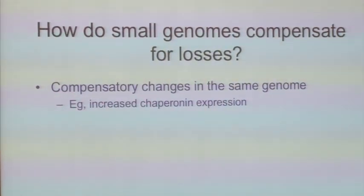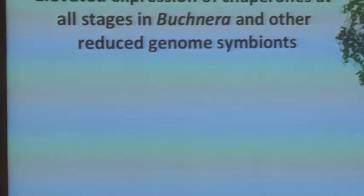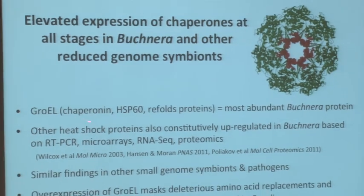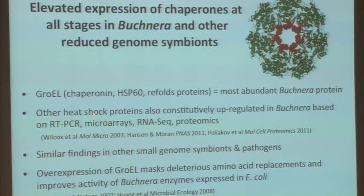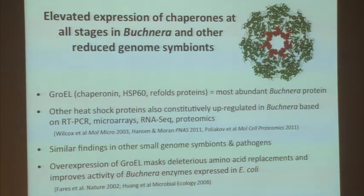What happens as they get smaller and smaller — how do they compensate? One thing is compensation within the same genome: in all of these cases they very highly express their chaperones — chaperonin and other heat shock proteins that deal with destabilized proteins. This is a pattern seen again and again; they're always the most highly expressed genes in transcriptomes of these symbionts. First noticed in Buchnera, where Hsp60 or chaperonin is highly expressed, along with DnaK and DnaJ. They're constitutively — without any heat shock — always highly expressed. This could be a compensation: all these less stable proteins, so you invest a lot in refolding and recycling them.